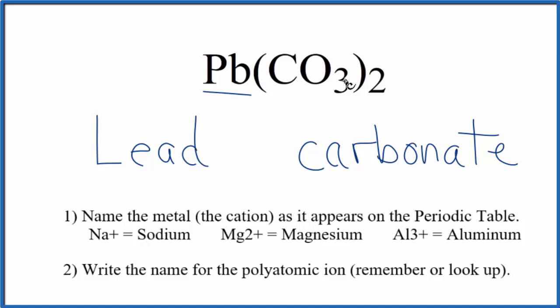So, we don't know the charge on lead, but we do know that the carbonate has a charge of 2-, and that's the whole ion has that 2- charge. And we have 2 of them. So, 2 times 2-, that's 4-. This has to be 4+ for it to balance to have a net charge of 0.